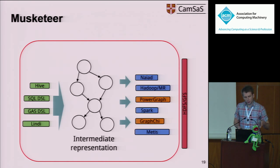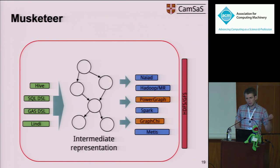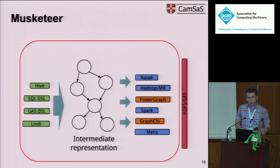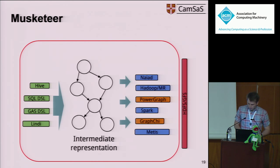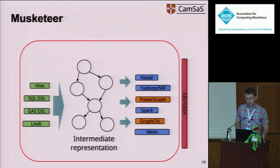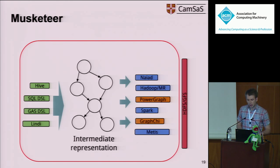Musketeer supports four front-end languages, with Hive and Lindy among them, and six popular back-end execution engines, with Spark, Hadoop, and Naiad among them. Having seen what Musketeer does, let me tell you a little more about how it works.